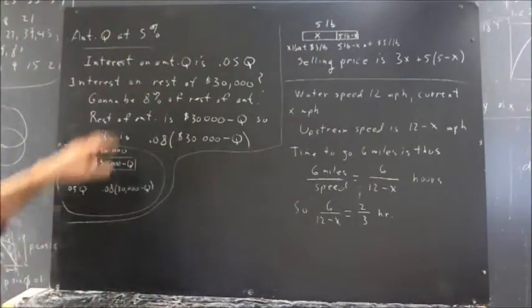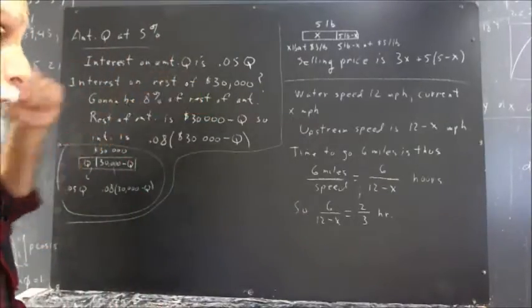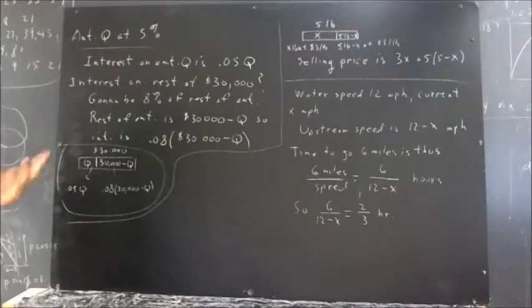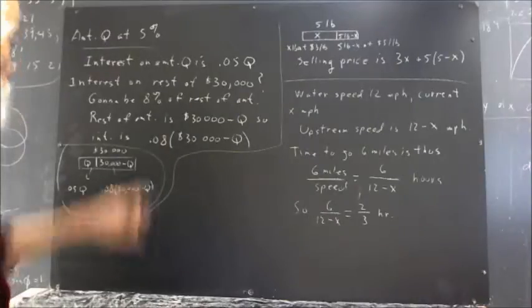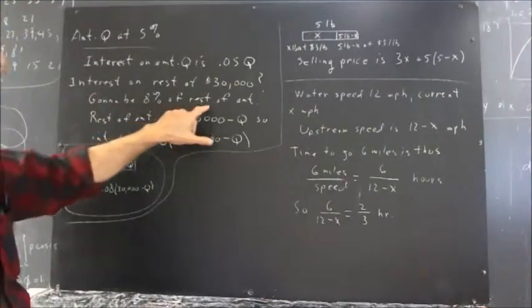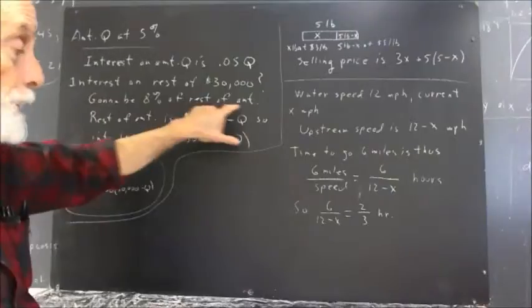First thing, interest on the rest of the $30,000, first thing you've got to have is some expression for the rest of the $30,000. And then it's going to be 8% of that, 8% of the rest of the amount.